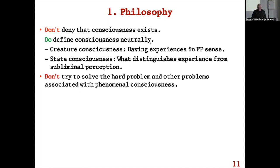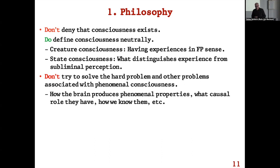Another obvious one: don't try to solve the hard problem and other problems associated with phenomenal consciousness. It's not a problem — it doesn't exist. The hard problem is explaining these extra features; there aren't any extra features, so there's no problem. Don't speculate about how the brain produces phenomenal properties, what causal role they have, or how we know them.